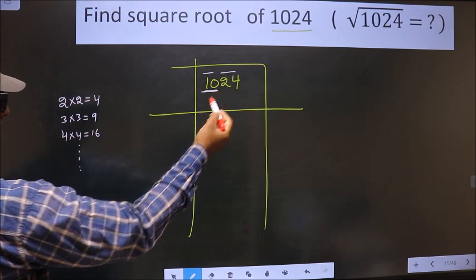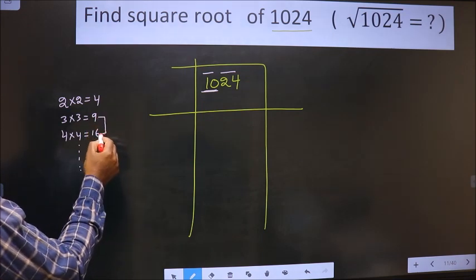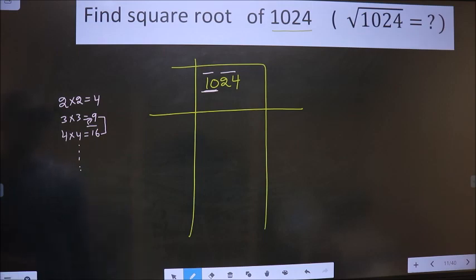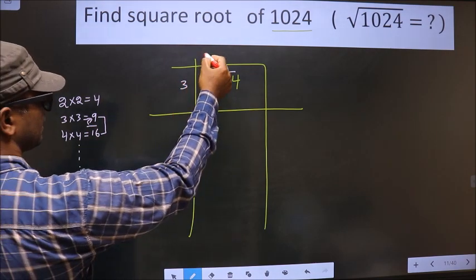We have here 10. 10 lies between these two numbers. So we take the smaller one that is 9. 9 is 3 into 3 is 9.